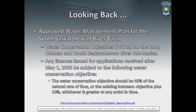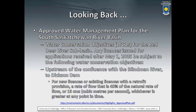What happened as a result of the approval of that plan was a setting of some of these water conservation objectives. The objective is 45% of the natural rate of flow, or the existing in-stream objectives plus 10%, in the Bow, Old Man, and South Saskatchewan basins. We also have this for the Red Deer Subbasin — 45% of the natural rate, with a different minimum flow — using the mechanisms in the Water Act to at least partially identify the water conservation objectives. It didn't necessarily mean we were going to achieve them, but it set them as objectives.